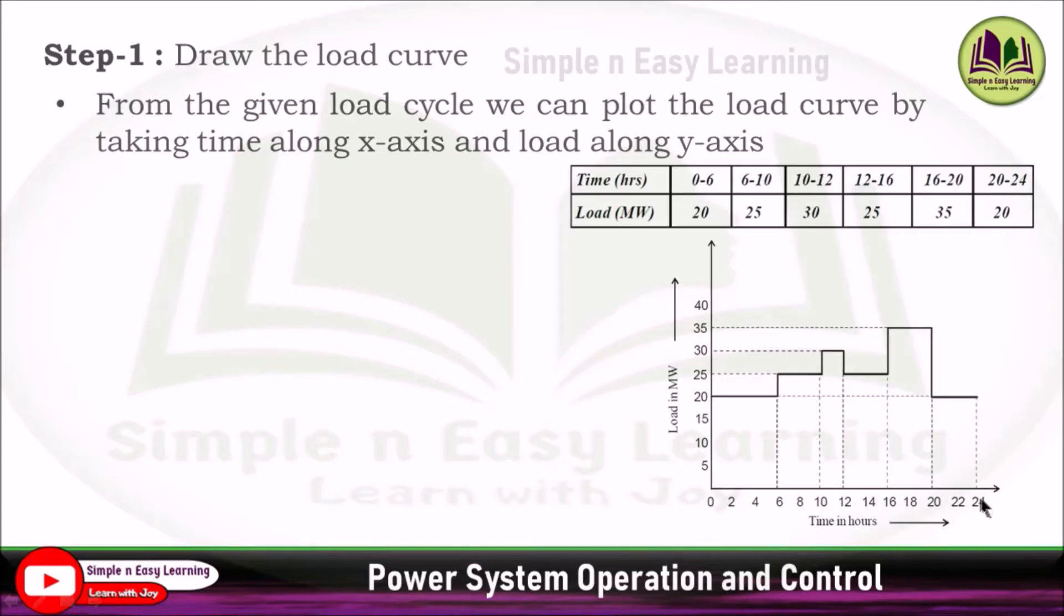Here in x-axis 0 to 24 representing the 24 hours, and here it is load 0 to 40. The maximum load here is 35, so I have entered up to 40. 0 to 6 hours is 20 megawatt. Then 6 to 10 is 25 megawatt. Then 10 to 12 is 30 megawatt. Then 12 to 16 again 25 megawatt. Then 16 to 20 is 35 megawatt. Then 20 to 24 is 20 megawatt. Like that you can easily plot this load curve using the given table.